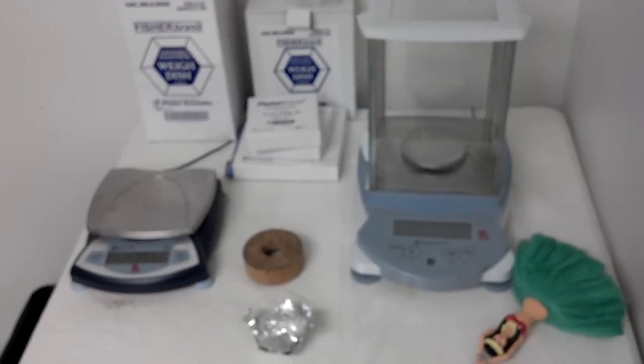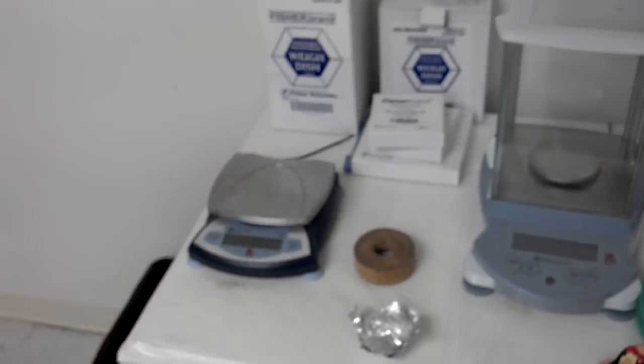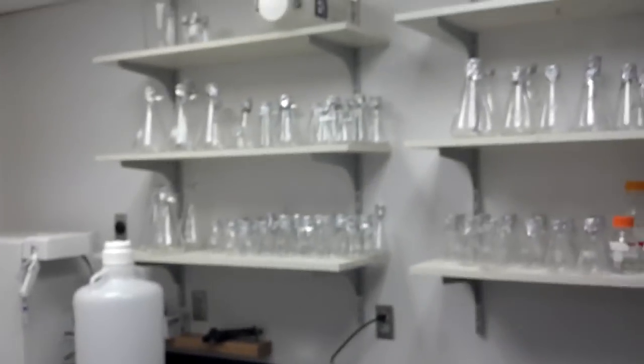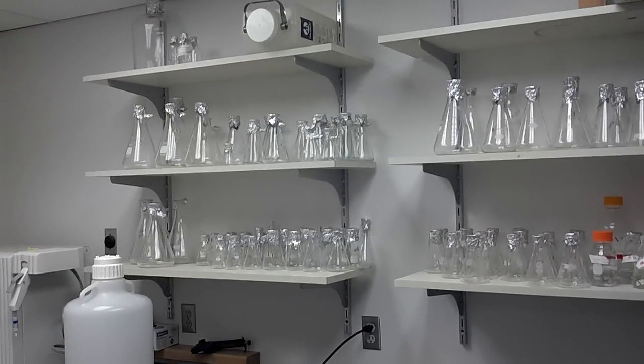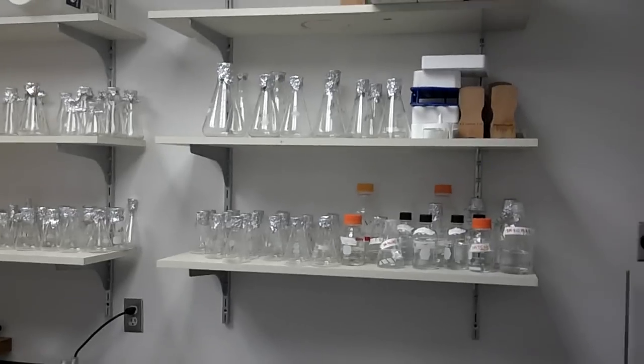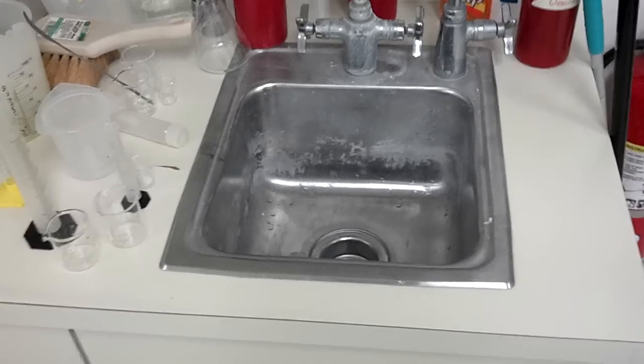Some balances where we weigh things out, usually agar gels for running electrophoresis. More autoclaved bottles. Sink, where we dispose of probably a lot of toxic shit.